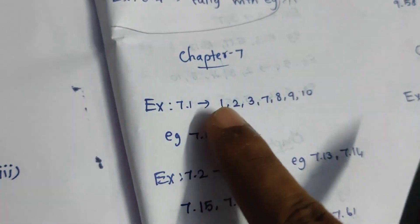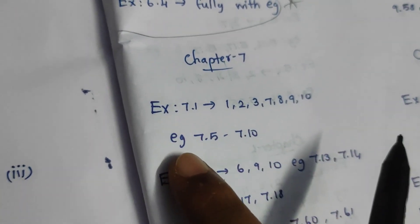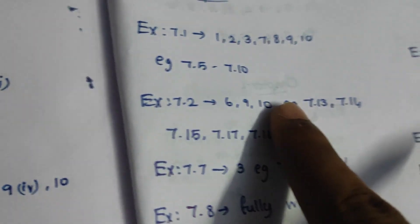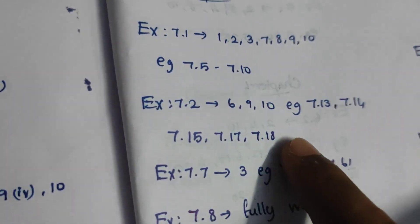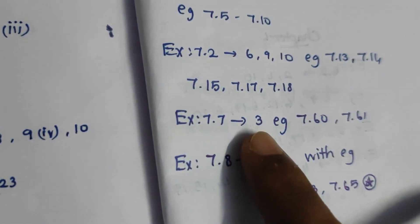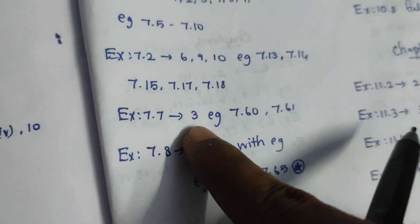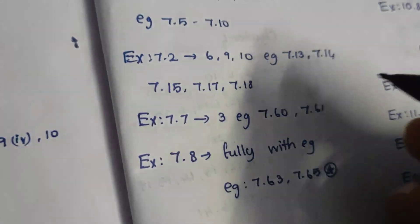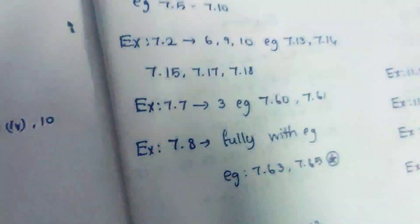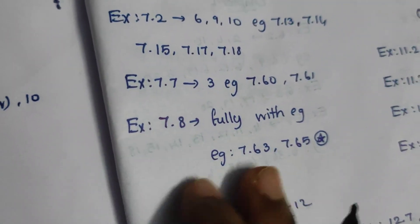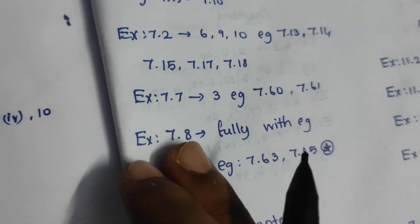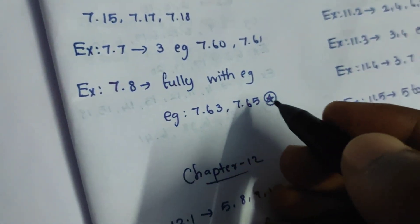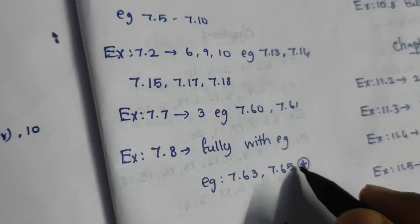Exercise 7.1 — 1, 2, 3, 7, 8, 9, 10. So exercise 7.5, 7.10. Exercise 7.2 — 6th, 9th, 10th. Exercise 7.13 — 15, 17, 18 — here are examples. Exercise 7.7 C. Exercise 7.7, exercise 7.8. 7.63, 7.65 are important star.